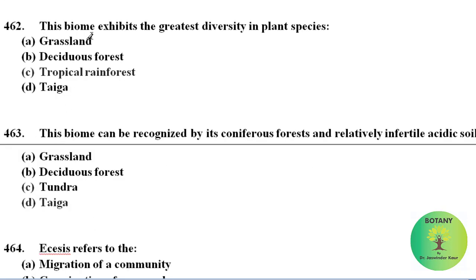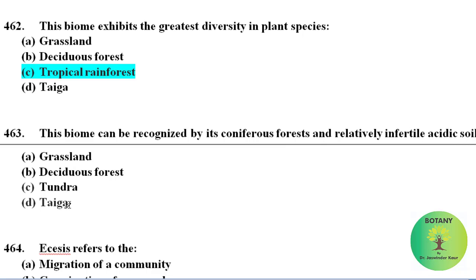Tropical rainforest is the biome that exhibits the greatest diversity in plant species. The biome that can be recognized by its coniferous forest and relatively infertile acidic soil is the taiga biome.